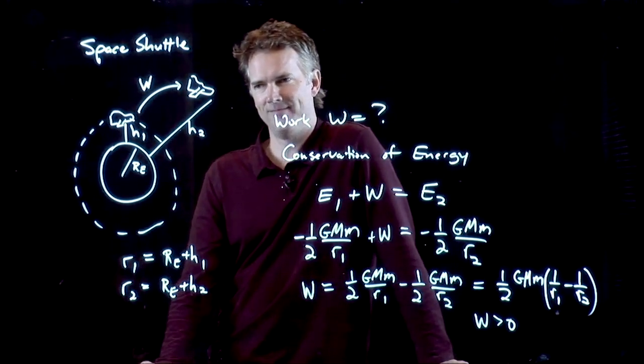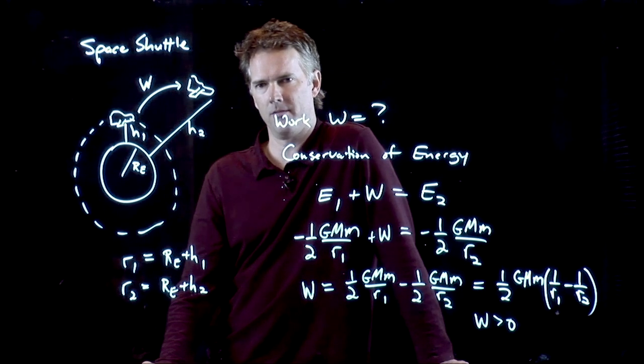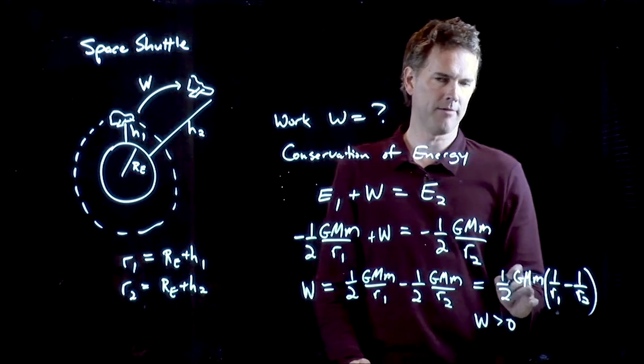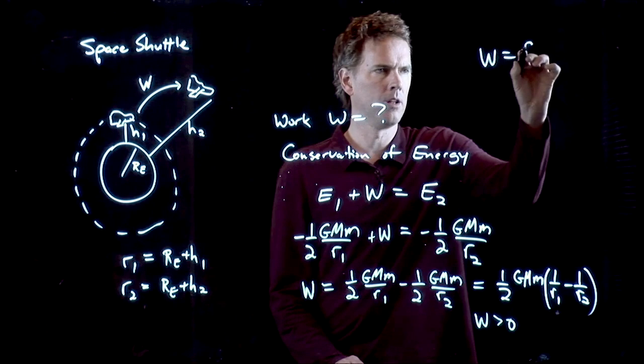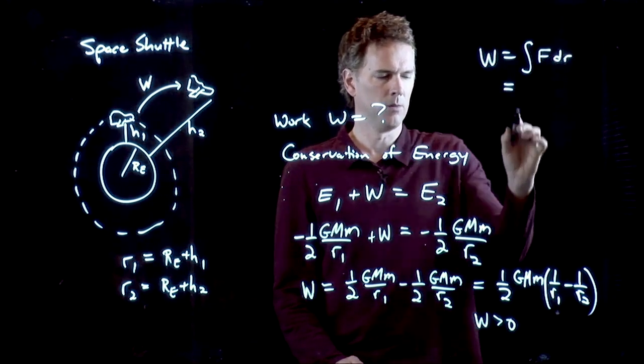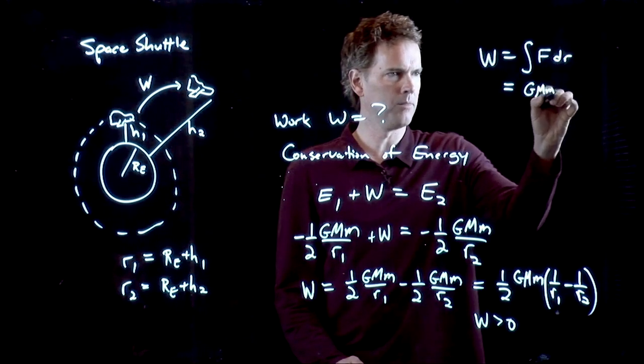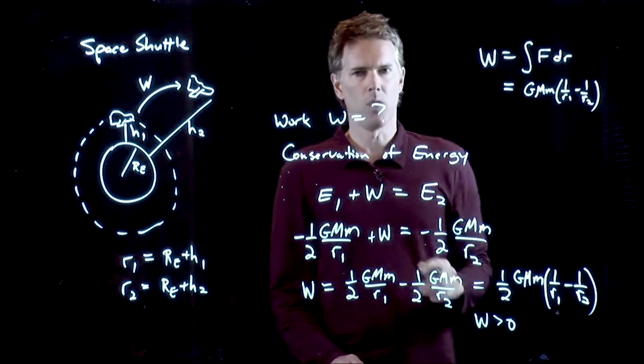Anybody write it down? It's different. Isaiah, what's different about it? The half. The half, right? When we did the integral of F dr, we ended up, not with this, but GMm 1 over R1 minus 1 over R2. No half.